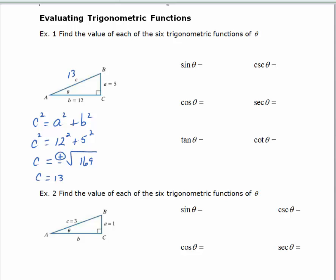Now that I have the missing side, I can use the mnemonic device SOHCAHTOA to help me remember. The sine of theta is the opposite over the hypotenuse, so that would be 5 over 13. The cosine of theta is the adjacent over the hypotenuse, which is 12 over 13. And the tangent of theta is the opposite over the adjacent, which is 5 over 12.